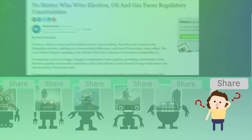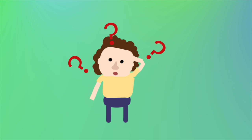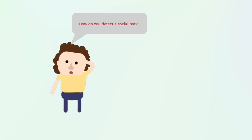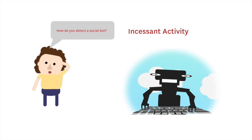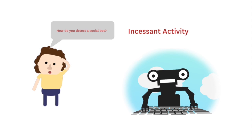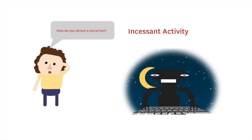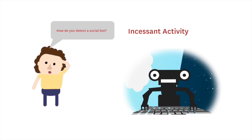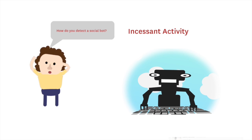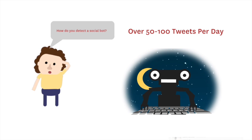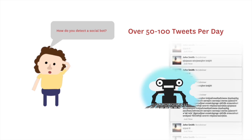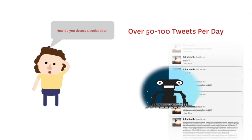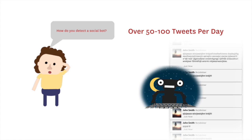So what can we do, and how do you detect a social bot? One giveaway is incessant activity — a social bot may ignore normal patterns of human life, tweeting constantly day and night. Another sign is a high number of tweets; 50 to 100 per day is the max that very active human users can produce. More than this is suspicious.